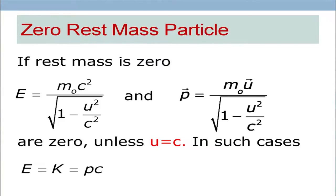If m0 happens to be zero, in principle energy and momentum would be zero, because m0 appears in the numerator. However, there is a possibility that if the denominator also becomes zero, then both energy and momentum will become zero over zero — and zero over zero need not be equal to zero. It could also have a finite value.